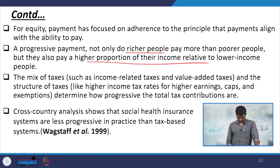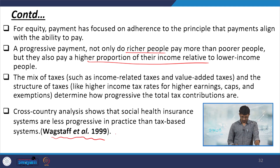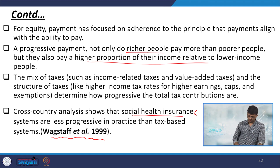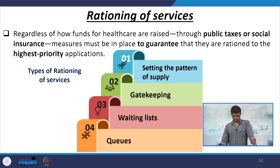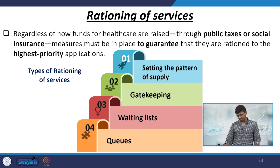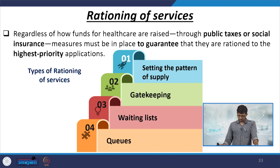Cross-country analysis shows that social health insurance systems are less progressive in practice than tax-based systems. Work by Wagstaff et al. derived that the social health insurance scheme is less progressive than tax-based systems. Another criterion is the rationing of services. Regardless of how funds for healthcare are raised, certain rationing is made according to priority of access to guarantee service delivery, whether through public taxes or social insurance schemes.